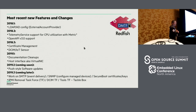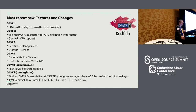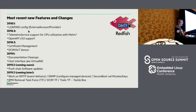Looking at recent new features and changes in the standard — it targets three releases per year, with possibly a fourth this year due to the number of additions. Last year they added LDAP Active Directory configuration support for BMC providers. They also added a telemetry service, which is probably very interesting — it allows you to collect information through metrics, typically for power and fans, in an easy way, avoiding the need to regularly poll the BMC.